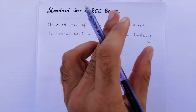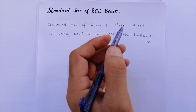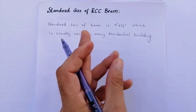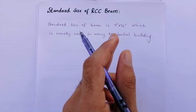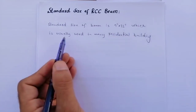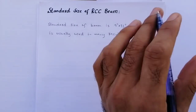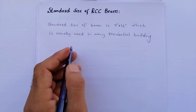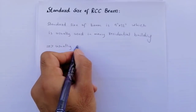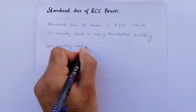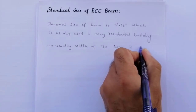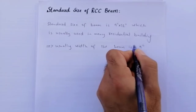If we look at normal conditions in Pakistan, India, and Afghanistan, in many countries the standard size of the RCC beam is 9 by 12 inch, which is usually used in many residential buildings. Remember that usually the width of the beam is kept at 9 inch.